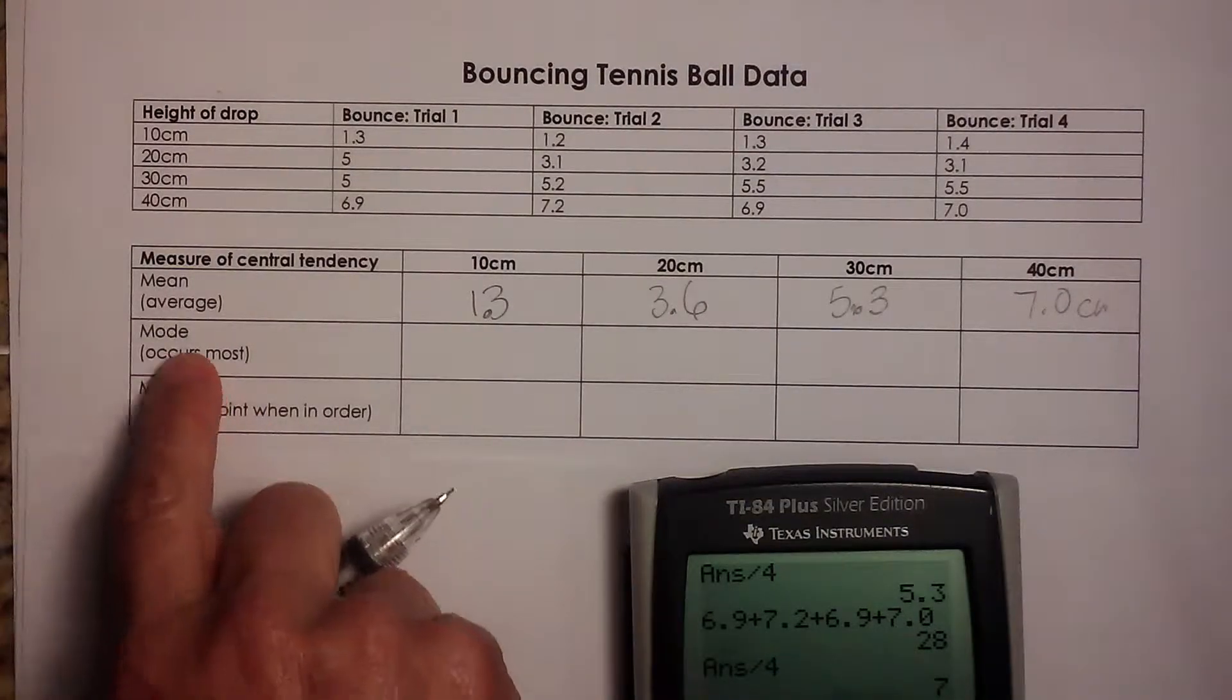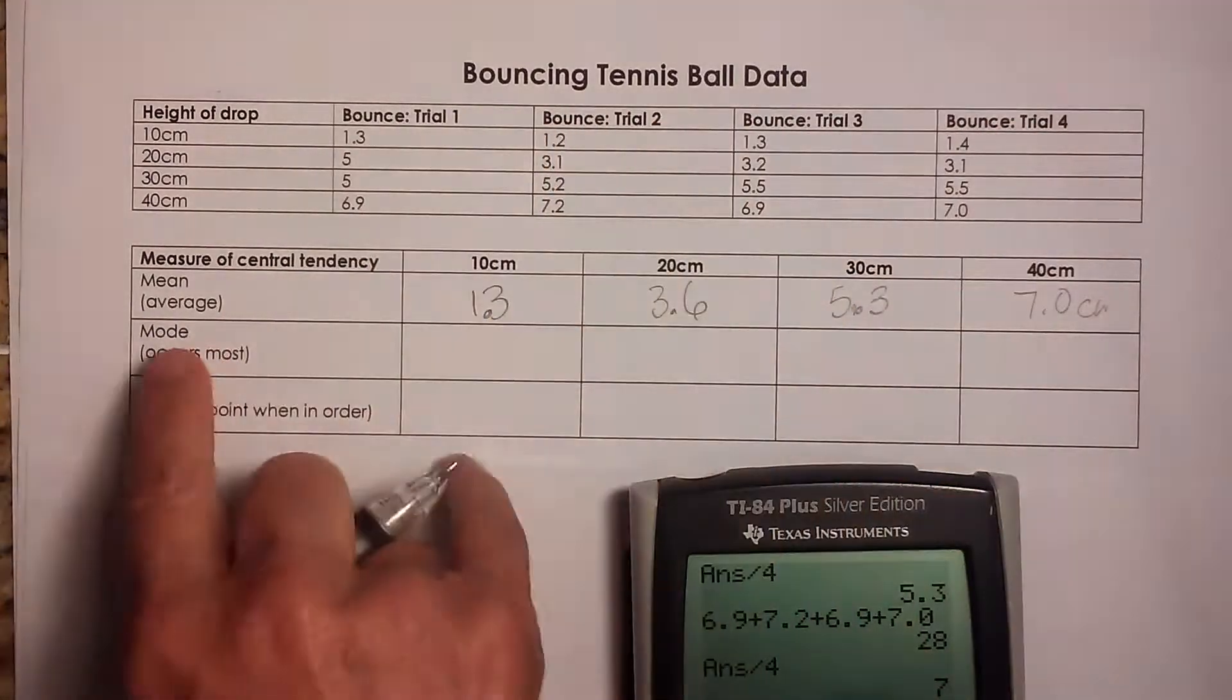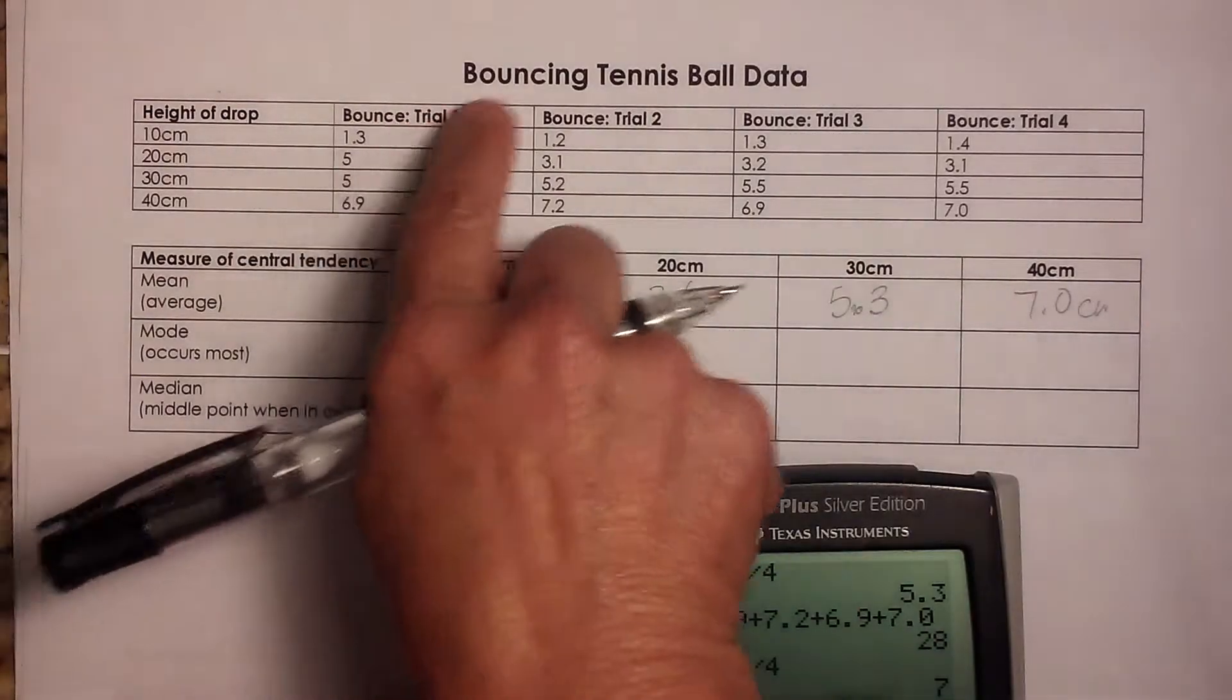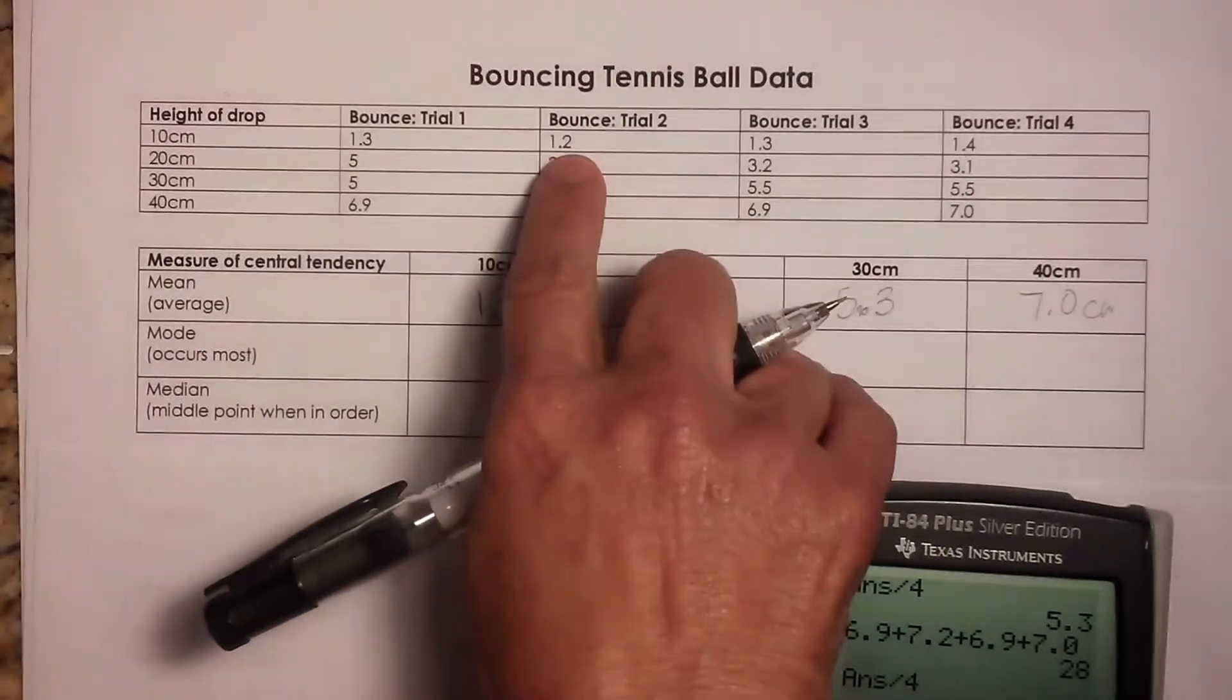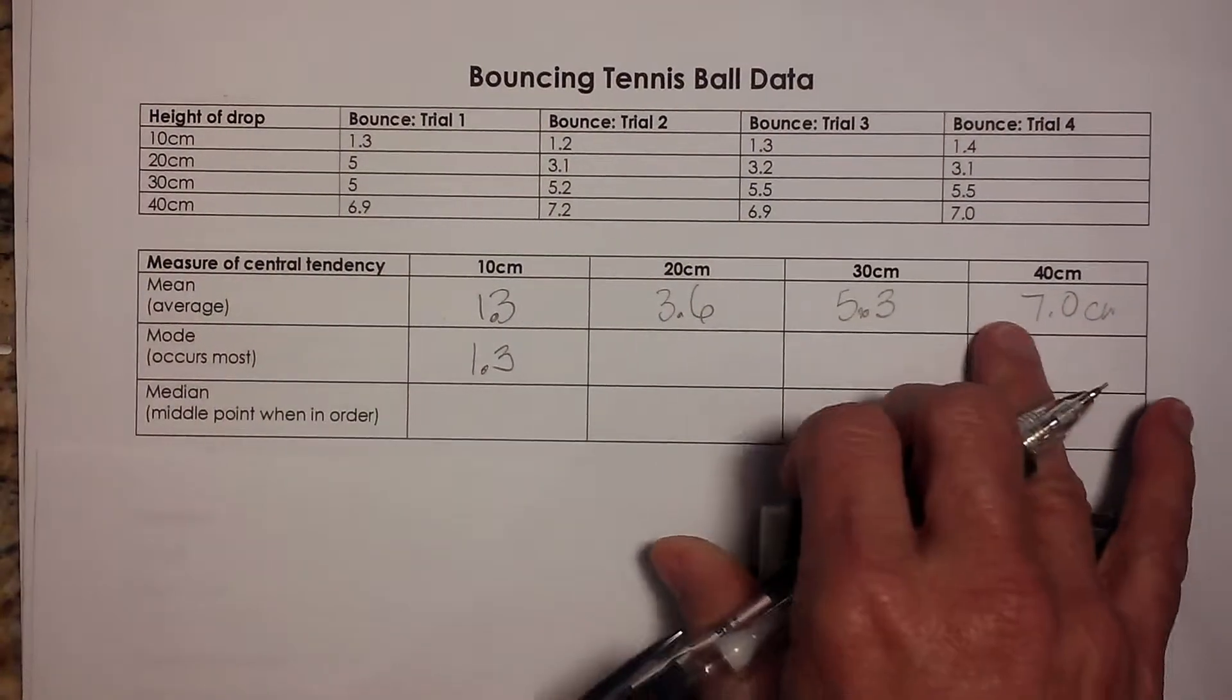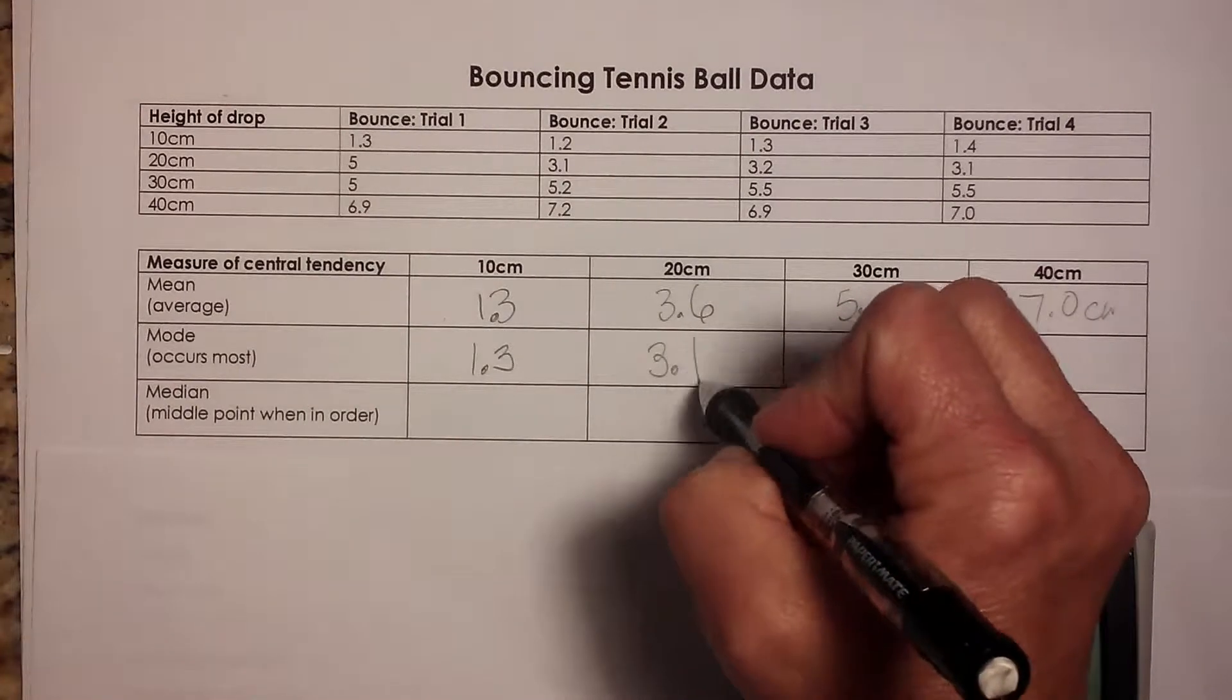The second measure of central tendency is our mode. So we're going to look in each area, the 10 centimeters, and we're going to see if we have a mode. Well, a mode is a value that occurs the most. So if it occurs three, four times in a large set of data, here we only have four. So let's see if any of ours repeat. Okay. We have 1.3, 1.2, 1.3, and 1.4. When we notice 1.3 repeats, so that is our mode. Okay. For 20 centimeters, we have a 5, 3.1, 3.2, 3.1, so 3.1 is our mode.